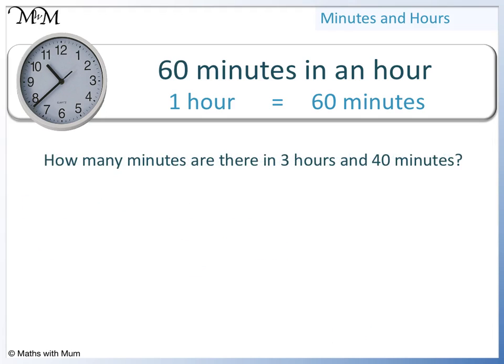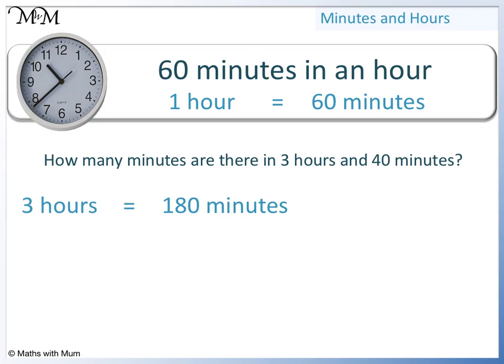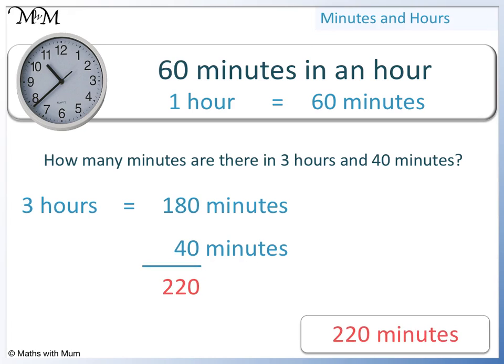How many minutes are there in 3 hours and 40 minutes? If 1 hour is 60 minutes, then 3 hours is 3 lots of 60 minutes, which equals 180 minutes. We also have an extra 40 minutes, so we add these 2 numbers together. 180 plus 40 equals 220. There are 220 minutes in 3 hours and 40 minutes.